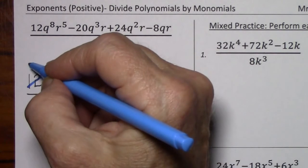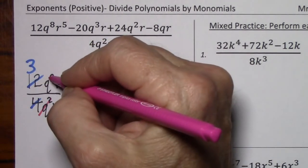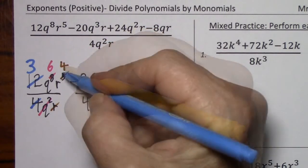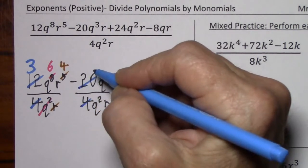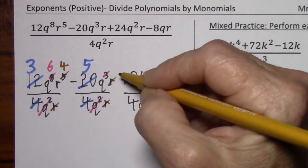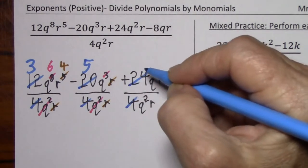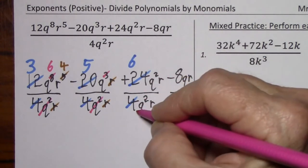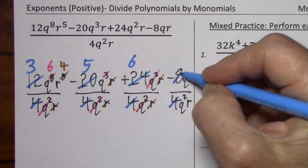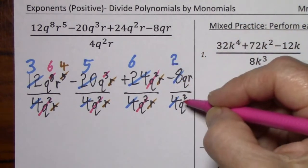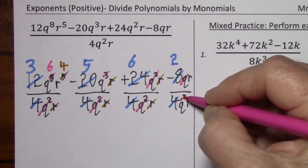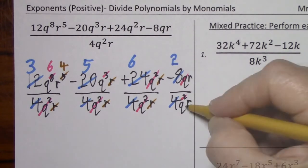Divide by 4, divide by 4. Cross out q squared, subtract 2. Cross out the r, subtract 1. Moving to the next fraction: divide by 4, divide by 4. Cross out q squared, subtract 2. The r's cancel. Divide by 4, divide by 4 — the q squareds cancel and the r's cancel as well. Divide by 4, divide by 4. Here the q in the numerator cancels out by subtracting 1 from the 2 for q squared, so this becomes q to the 1st in the denominator. And the r's cancel out.